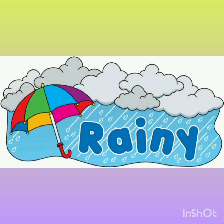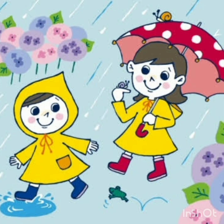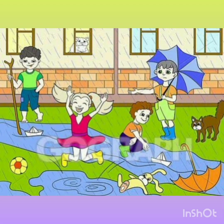Now let us look at the next season. Which season can you see here? Yes, it is the rainy season. There are dark clouds in the sky and it's pouring heavily. Now what do we wear in the rainy season? Some wear raincoats and gumboots; some carry an umbrella to protect ourselves from the rain.